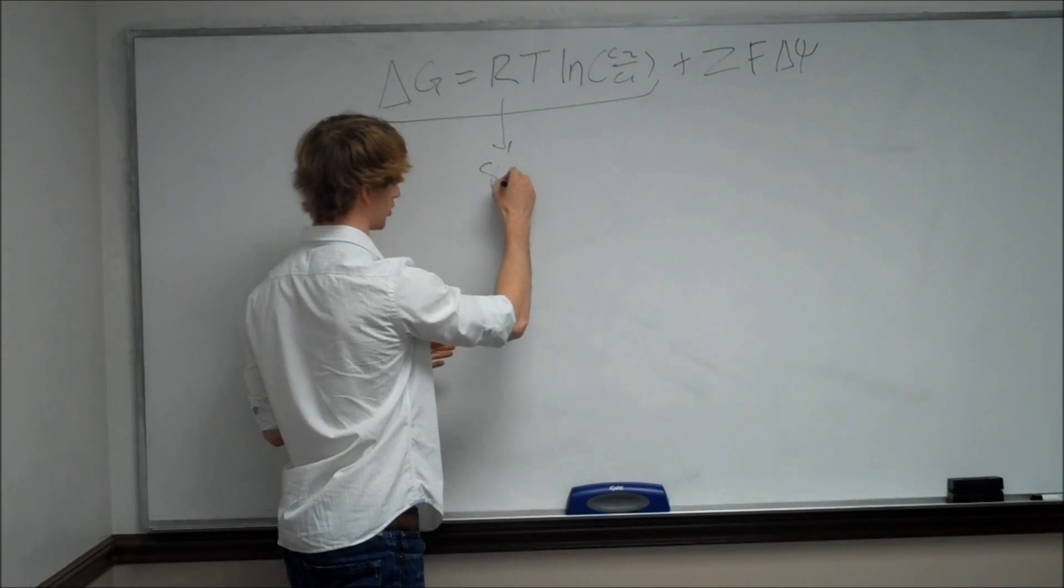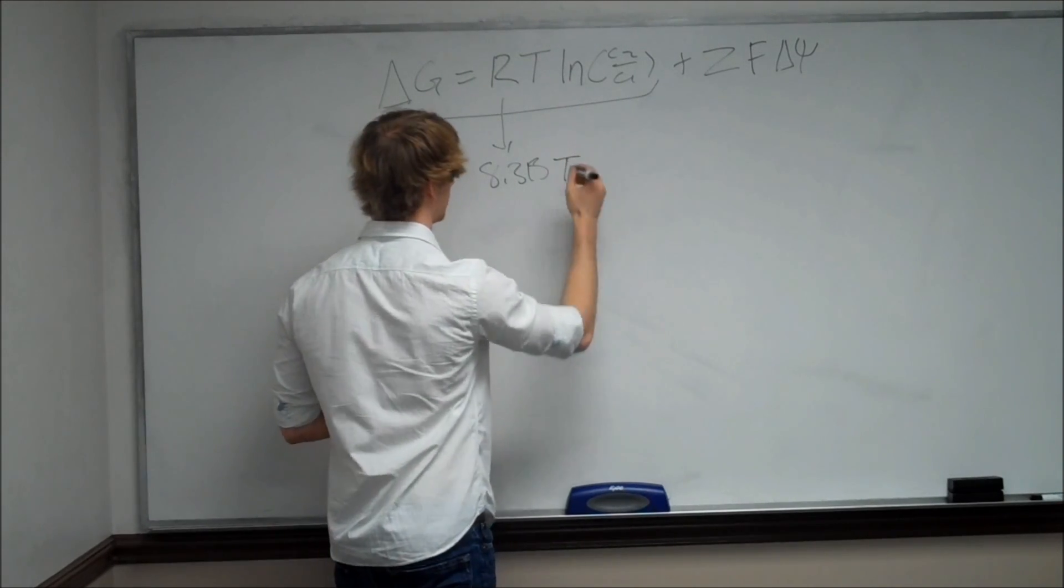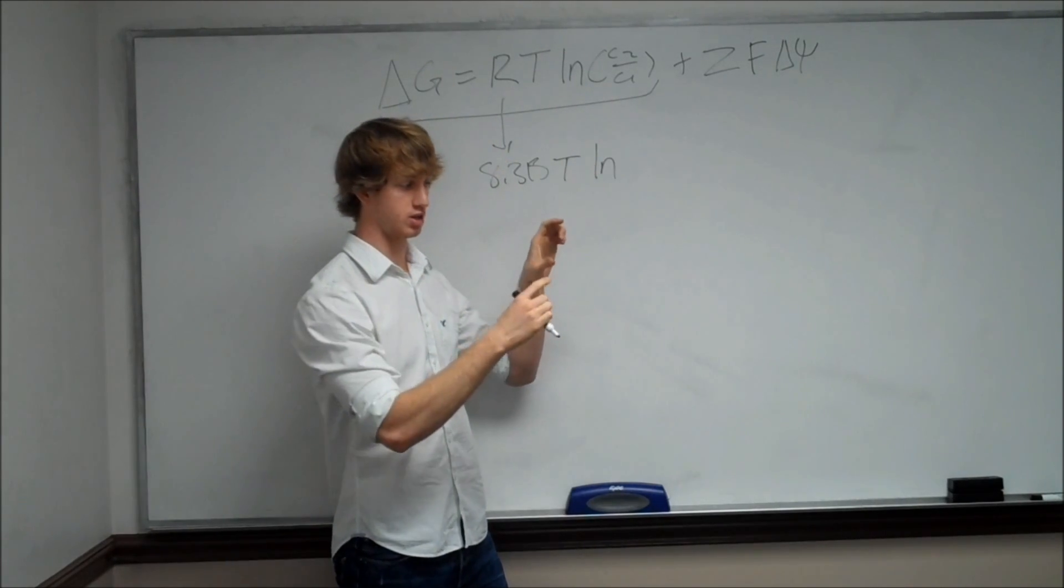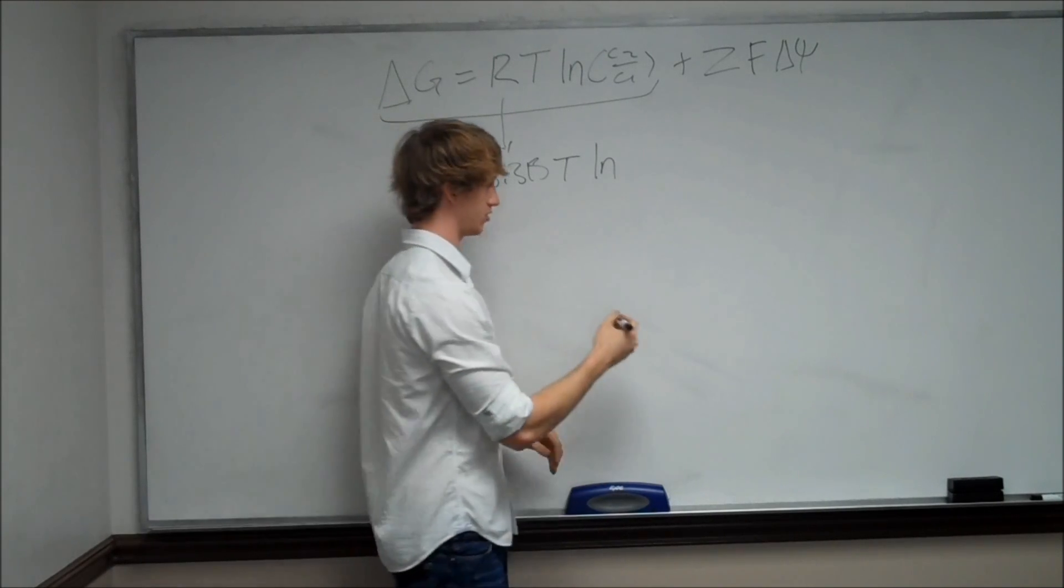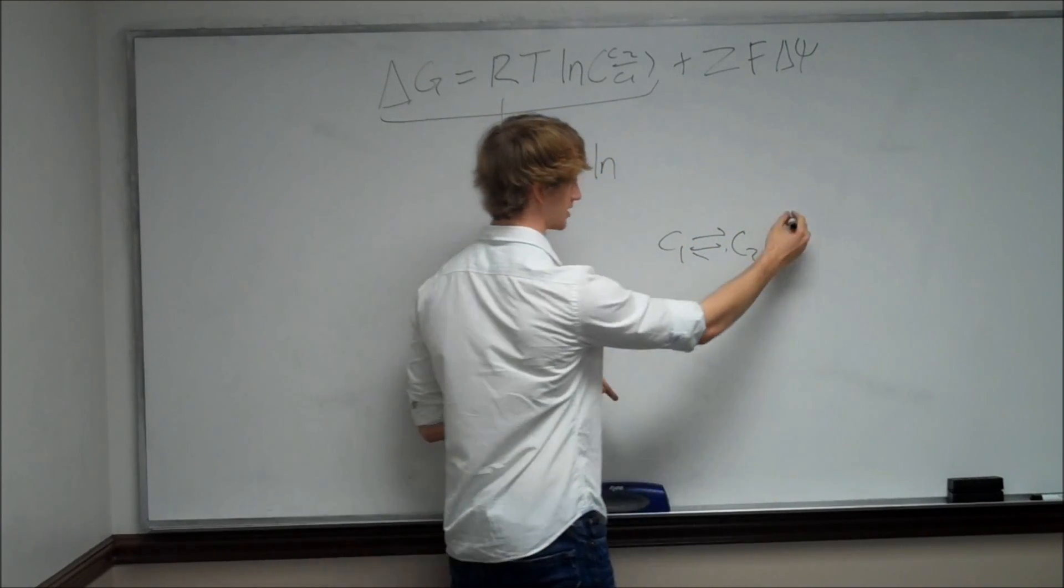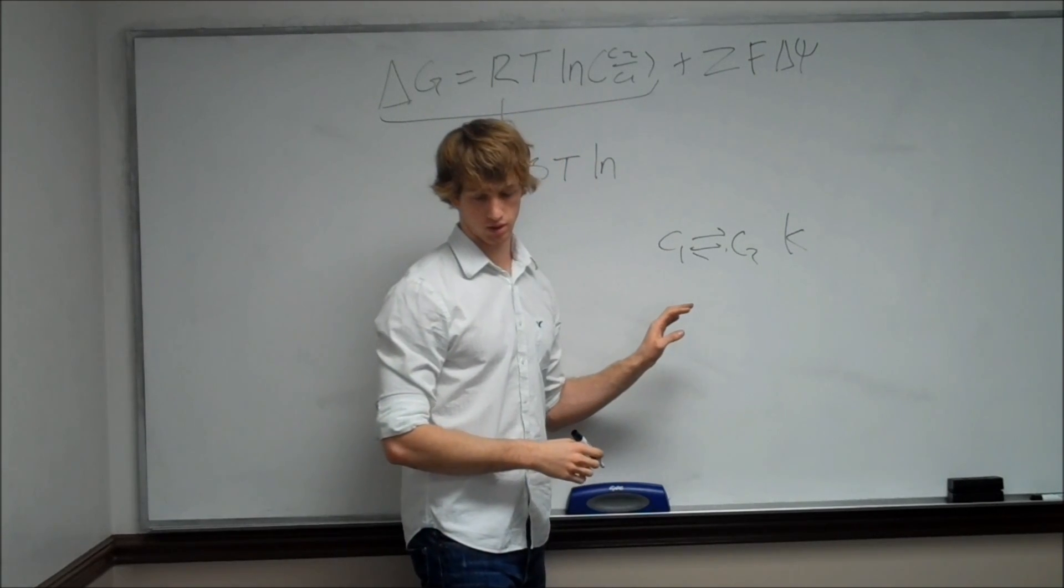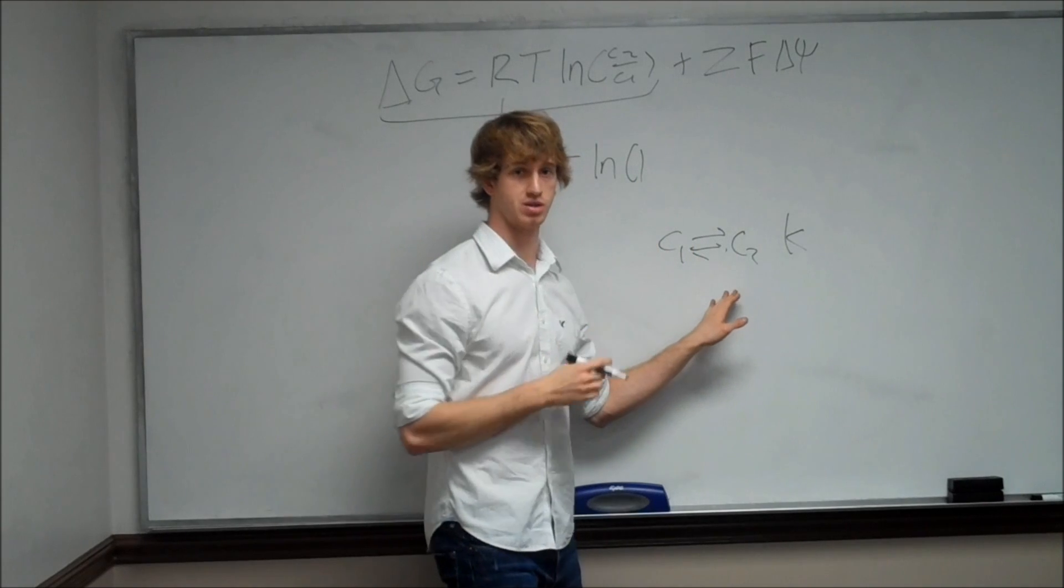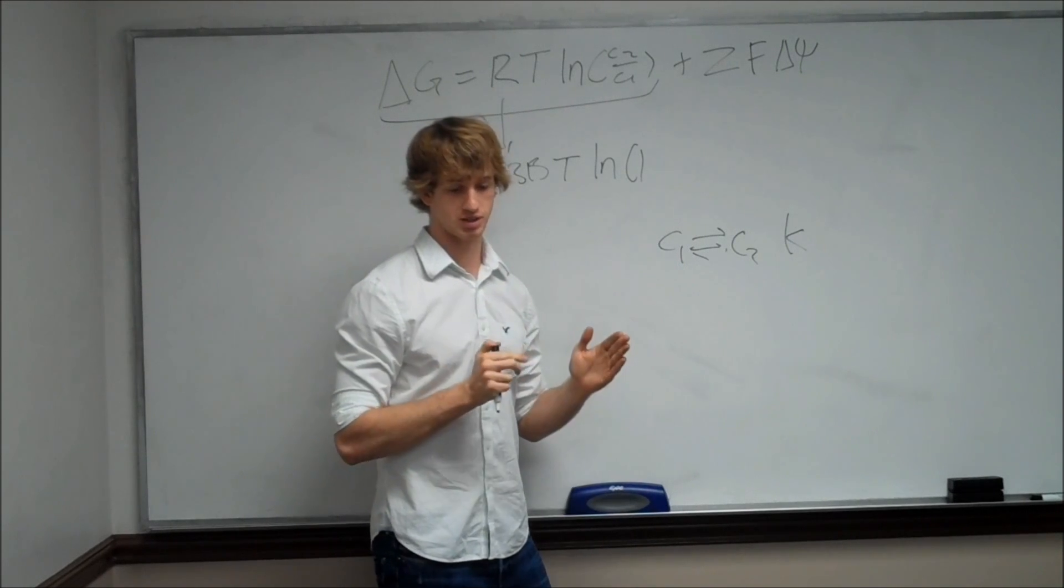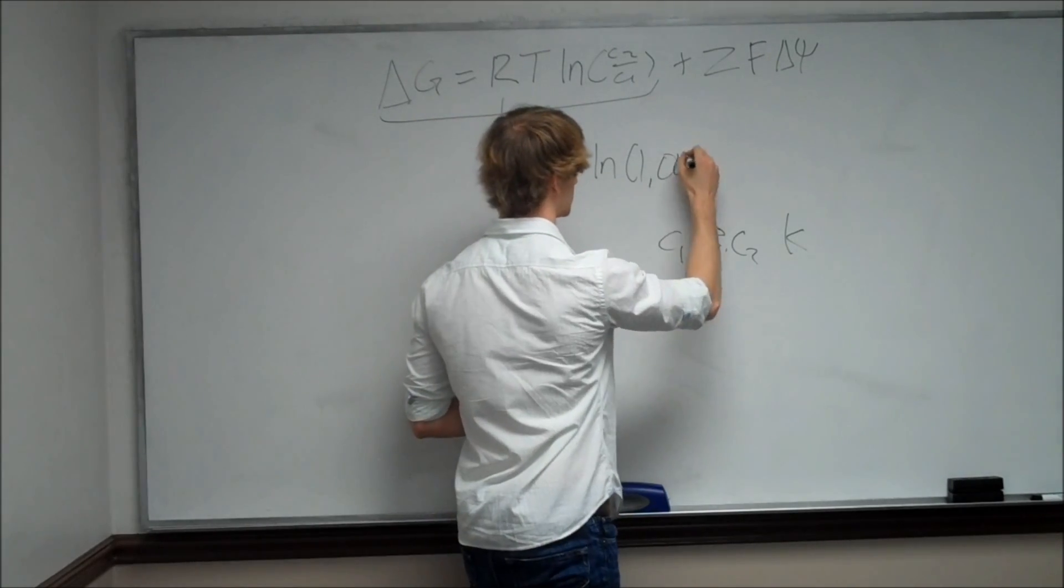This section, delta G equals RT times the natural log of K, is derived from your equilibrium values, the K values you have from Gen Chem 1, and your gas laws, PV equals NRT. So this is actually the gas constant, 8.315. The temperature, and the natural log of K. We have C2, which is one side, versus C1, which is the beginning. We have this equilibrium going on. Well, in this case, it's maintaining an equilibrium of one million. What you do is you take the gradient and the natural log of that, plug it into this equation.